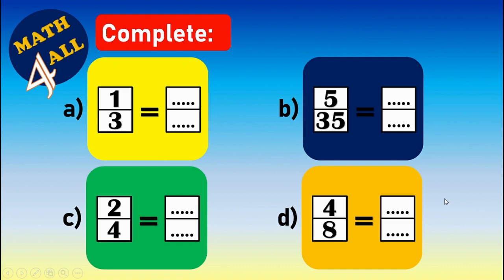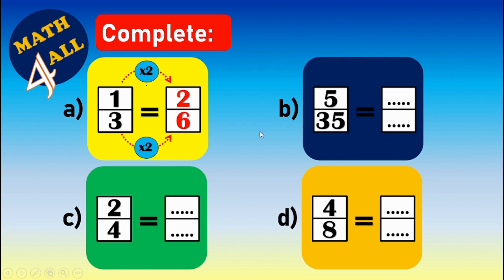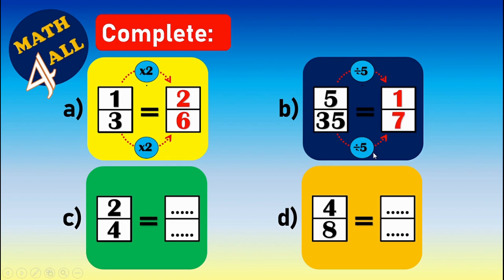Let's solve more examples. Remember: whatever you do to the top, you do to the bottom. Multiply by two: one times two equals two, three times two equals six. For example B, five over 35 is a big fraction — I'll use division. Five divided by five equals one, and 35 divided by five equals seven. So five over 35 is the same as one over seven.